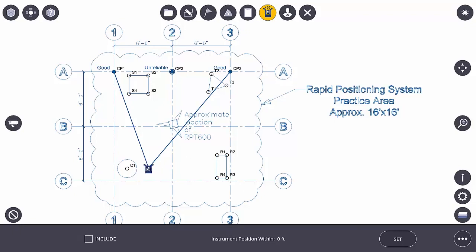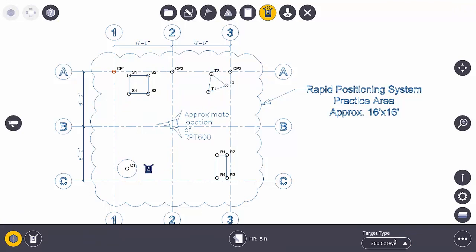You'll notice the instrument positions itself on the job site. We've got some good control points. And we can hit the set button now. And now the instrument knows where it is on the job site. We've got a valid setup. And now we're able to either go and lay out points or collect points.